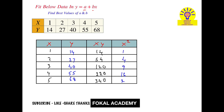In the next step, sum all the values in each column. The sum of all x values — 1 plus 2 plus 3 plus 4 plus 5 — gives 15. The sum of all y values — 14 plus 27 plus 40 and so on — gives 204.